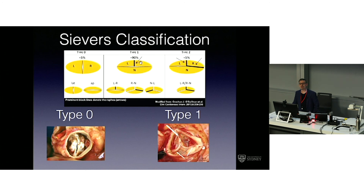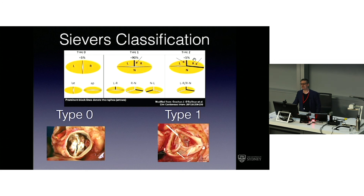The most common is the SEVIS type 1 bicuspid, where the right and left cusps are fused and there is a larger non-coronary cusp. SEVIS type 2 is essentially unicuspid — a single cusp — because two cusps are fused.